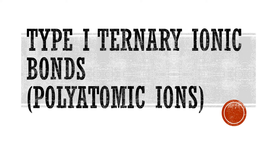Hey guys, we're going to continue on our formula writing and naming journey today with ternary ionic bonds. We're going to start with Type 1 ternary ionic bonds. This means we're going to use something called polyatomic ions.